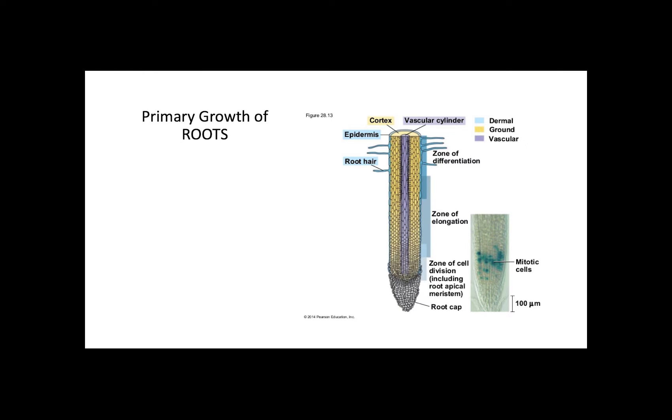The primary growth in roots corresponds to an elongation of the root underground. Here, we can identify the root cap, which is a protective structure of the root, and three important zones: the division, elongation, and differentiation zones.